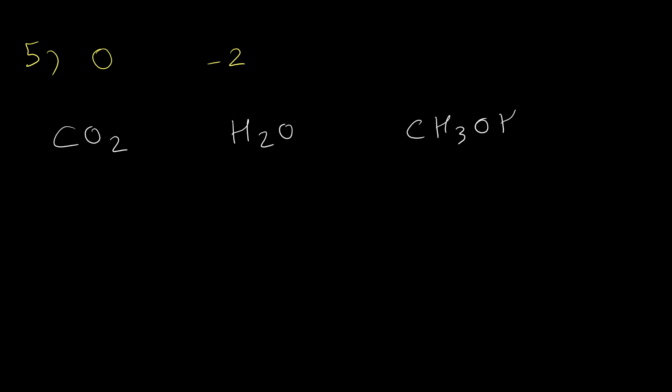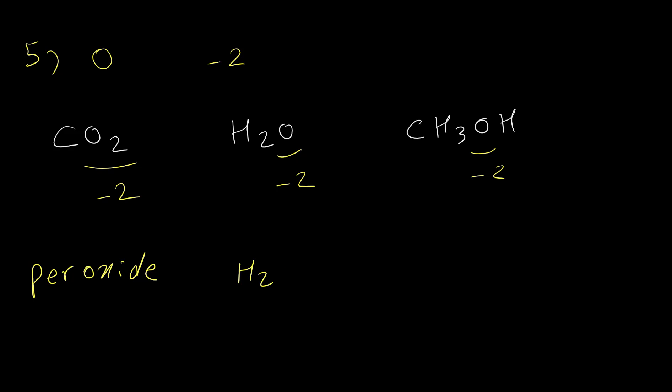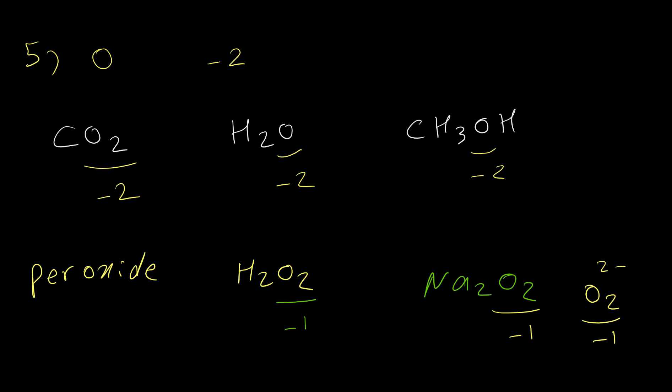Rule number 5 is about oxygen. For oxygen atoms in compounds — both ionic and covalent — the oxidation number is most of the time -2. For example, carbon dioxide, water, and alcohol all have oxygen with oxidation number -2. But there are rare exceptions: in peroxide compounds like hydrogen peroxide or sodium peroxide, the oxidation number for oxygen is -1. In other words, if we have O2^2-, it is a peroxide anion and oxidation number is always -1.